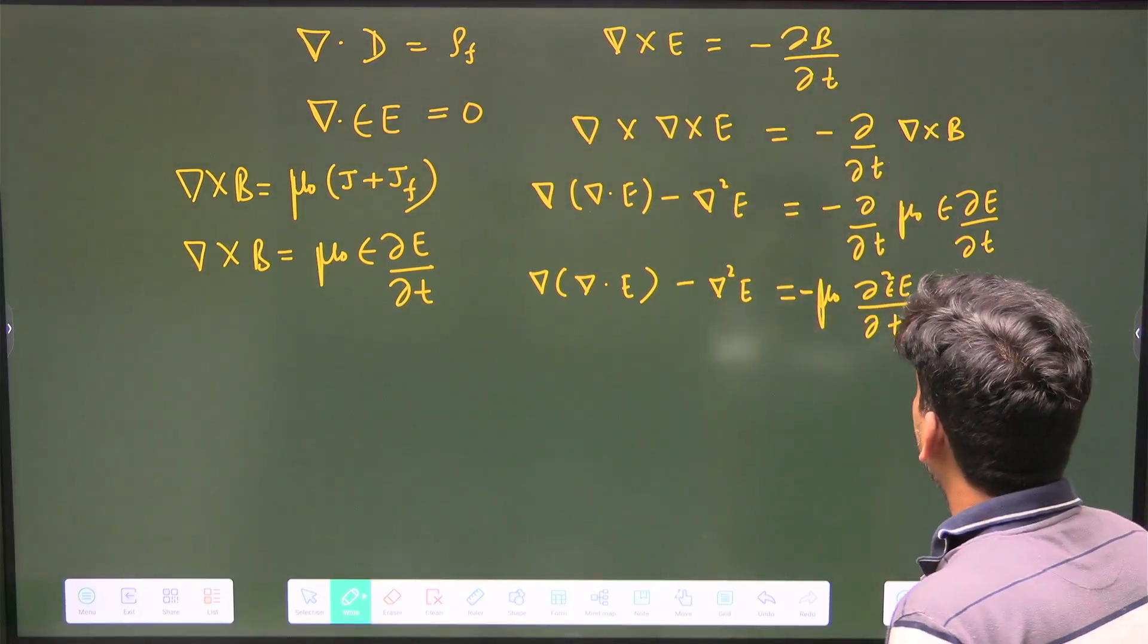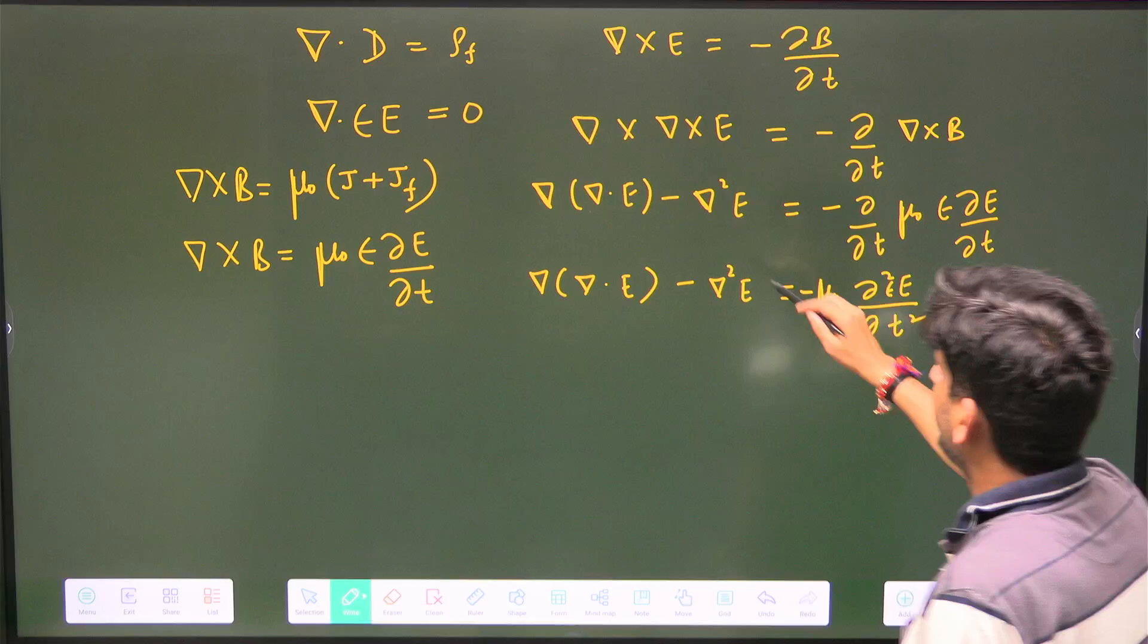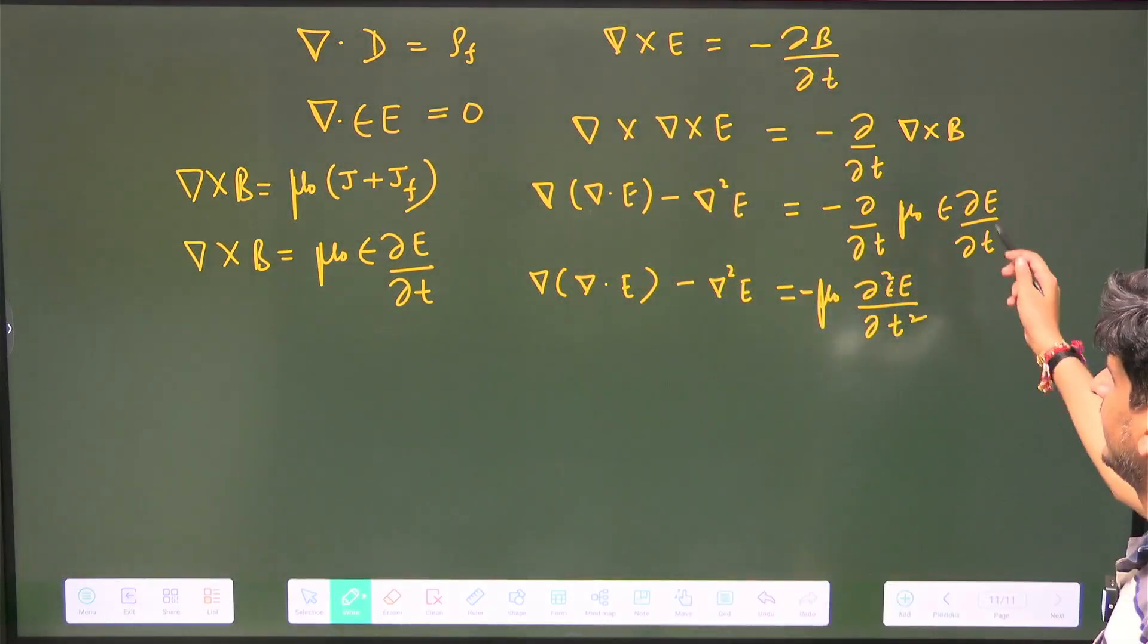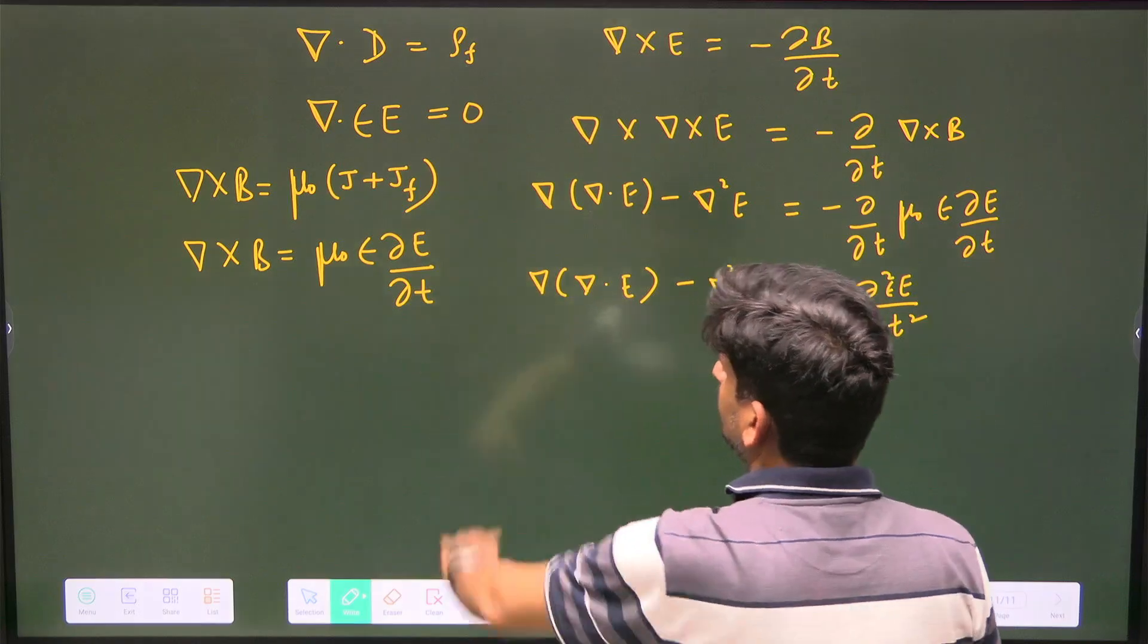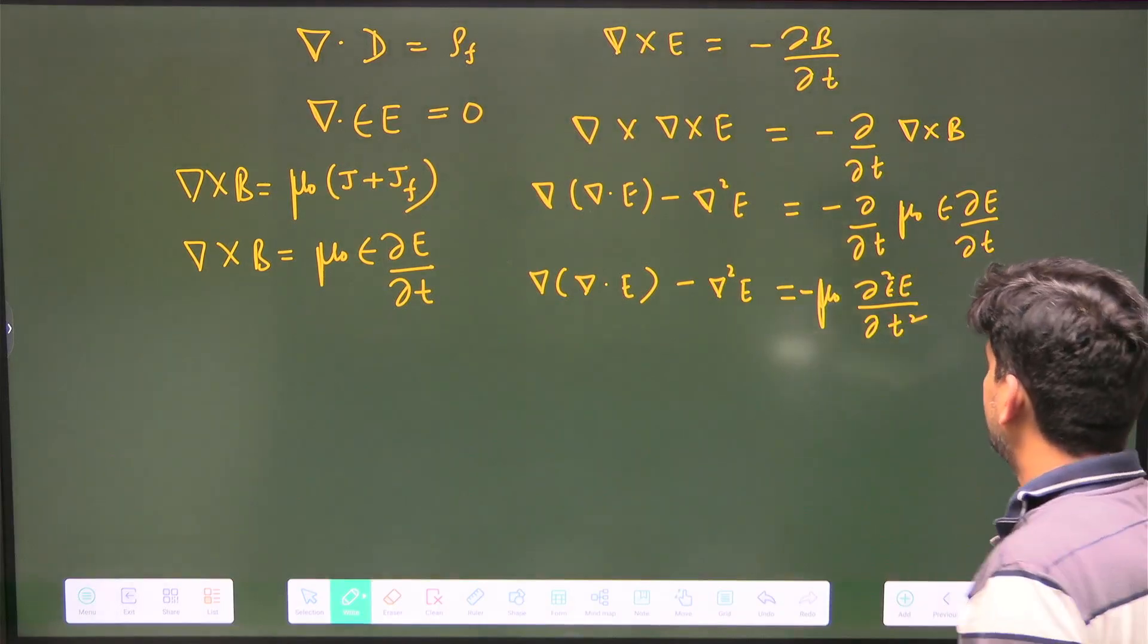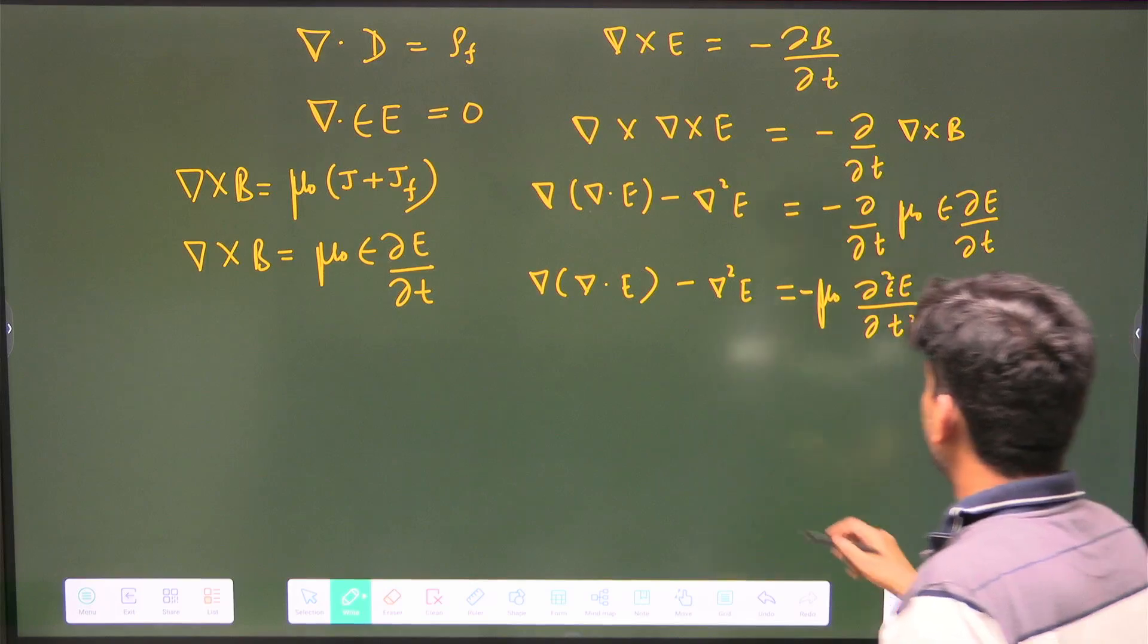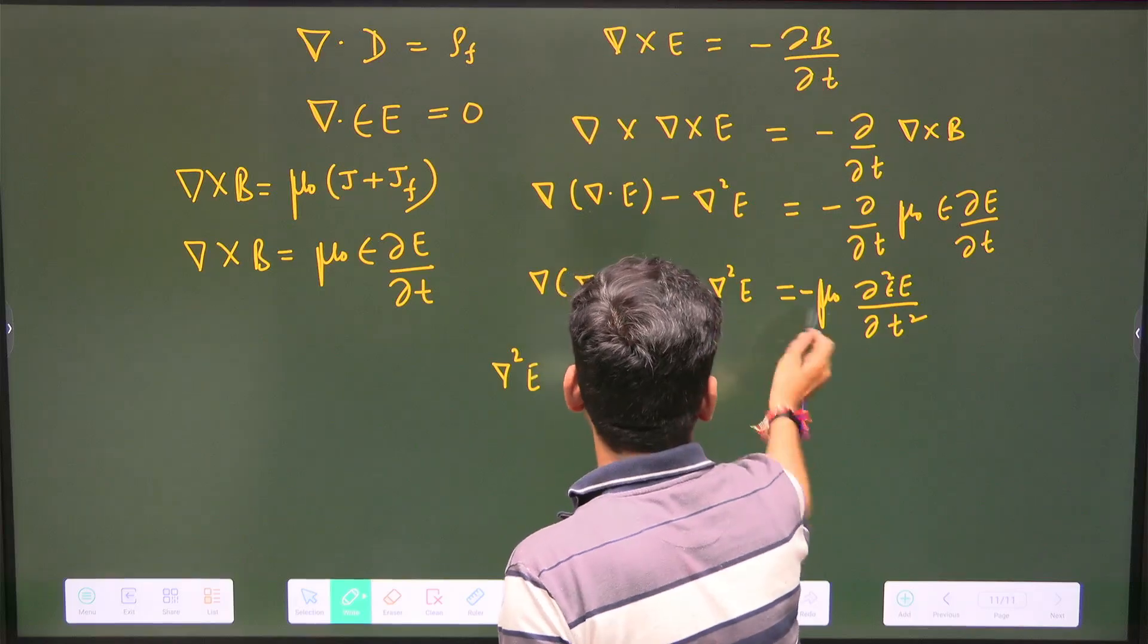Del cross E was minus del B by del t, then taking curl on both sides. I have applied BAC-CAB rule: del cross del cross E. On this side I'm writing curl from Ampere's law, but free current is zero, so I've taken displacement current and put ε inside with the electric field.